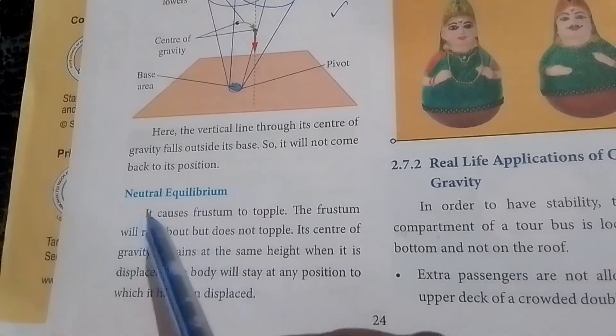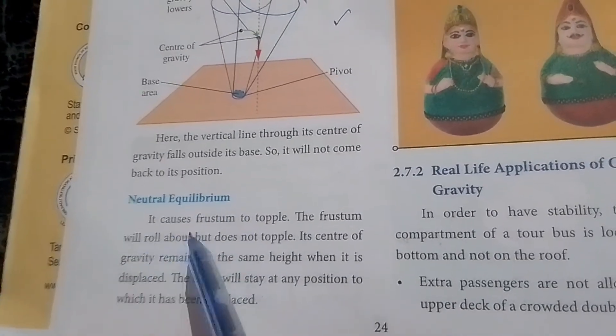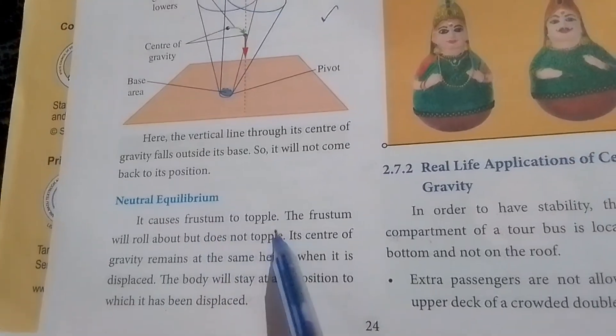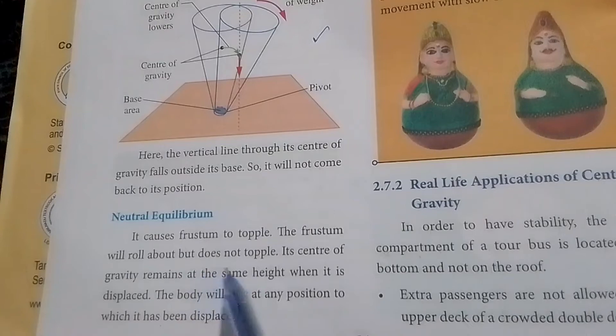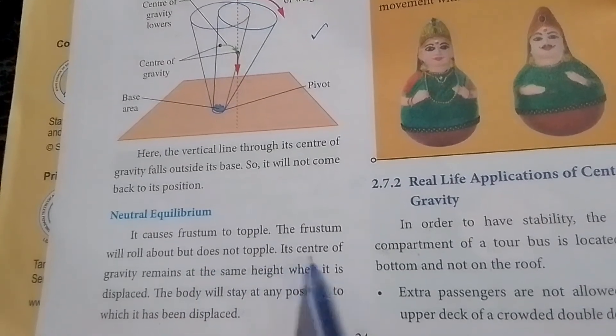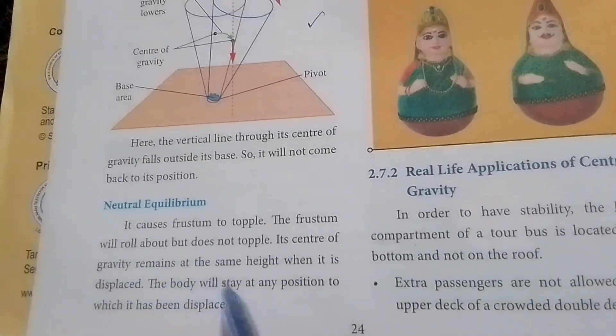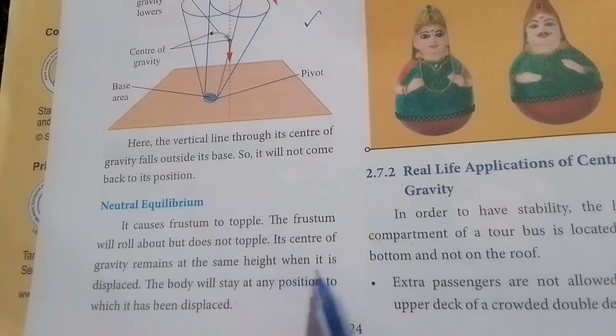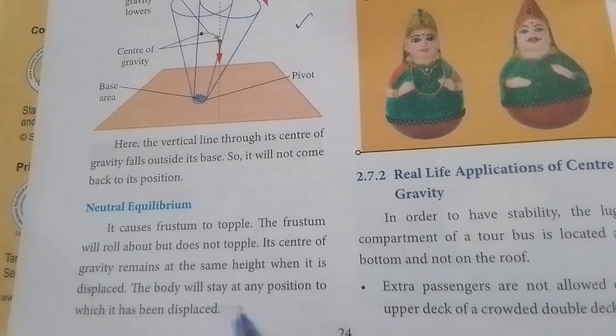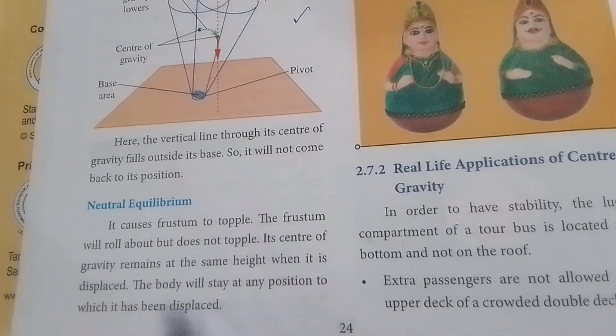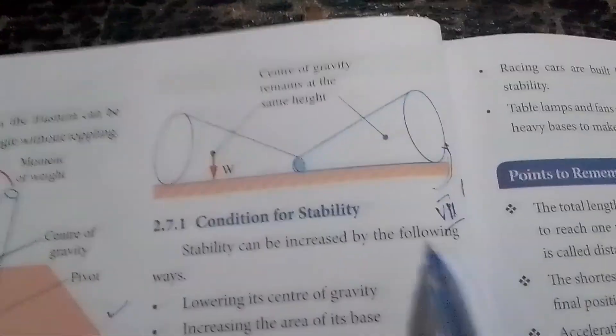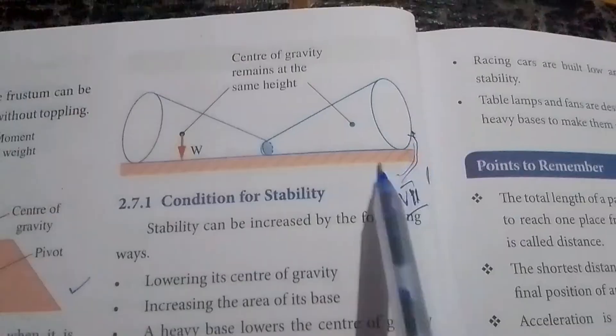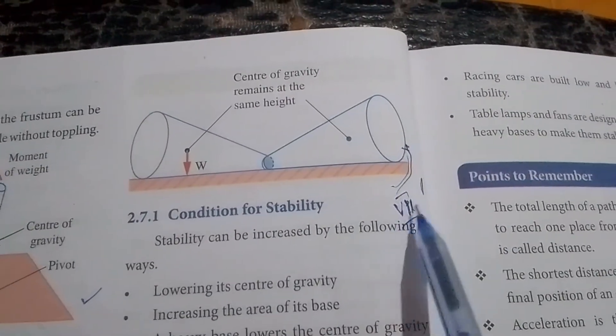Neutral equilibrium: It causes the frustum to topple. The frustum will roll about but does not topple. Its center of gravity remains at the same height when it is displaced. The body will stay at any position to which it has been displaced. In the diagram, draw it on your own. This is the seventh Roman letter, first detail answer.